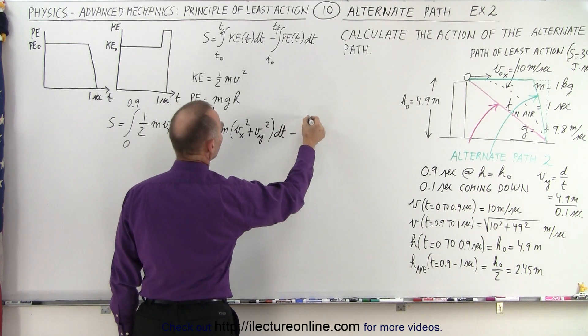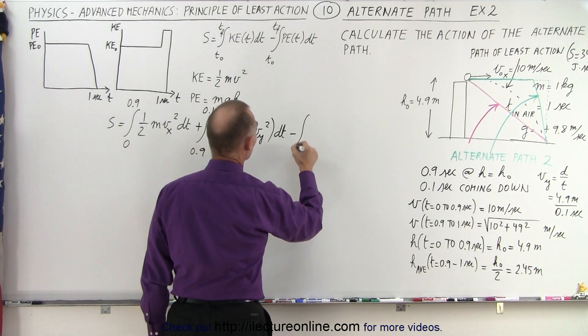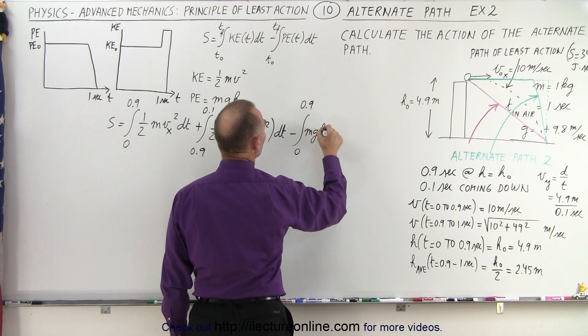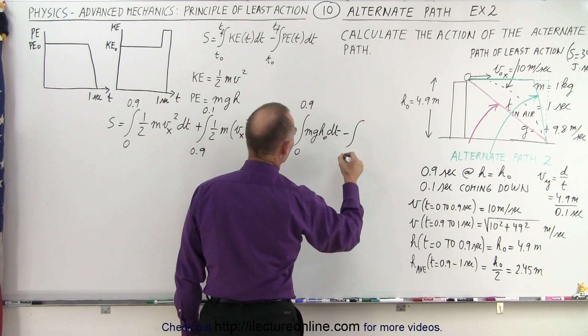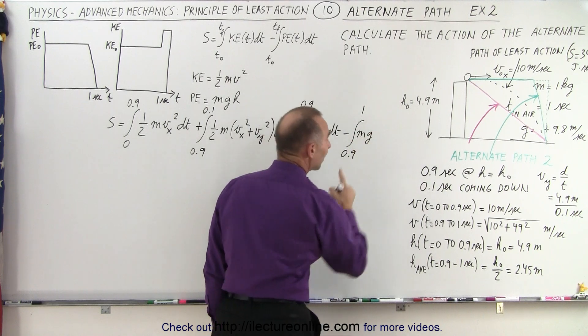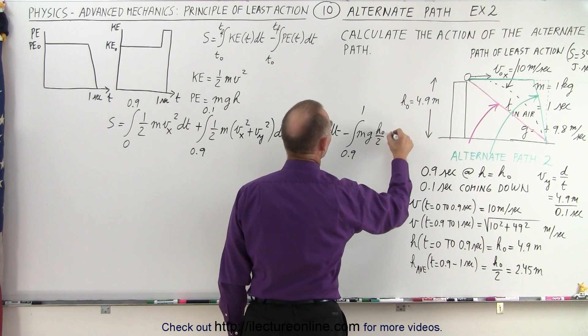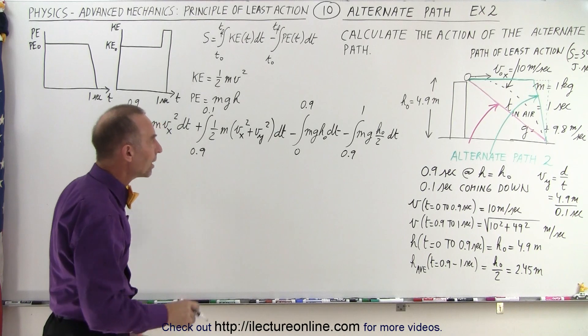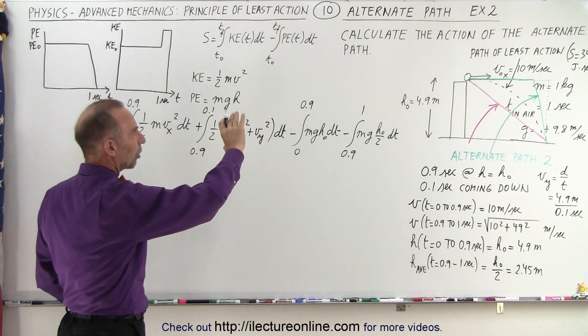Subtract from that the integral from 0 to 0.9 of the potential energy, which will be mgh sub naught times dt. That'll be a constant, and I'll subtract again the last portion from 0.9 to 1 of mg, and here I'm going to use the average height, which is h sub naught over 2 times dt, and that's acceptable because the velocity in the y direction will be a constant. All right, that is now the action for our alternate path.